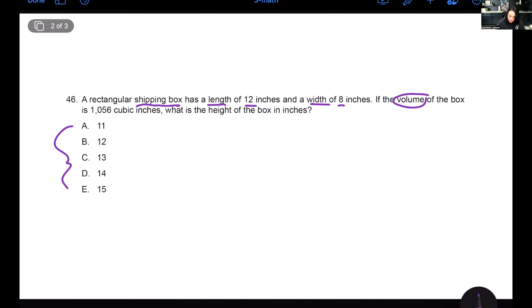Has a length of 12 inches. So I've got a length of 12 and a width of eight inches. Both of them are in inches. That's good news. I don't have to convert anything. If the volume of the box is 1056 cubic inches, what is the height of the box? And so you might be like, oh my God, how do I do this? This is very simple. We're talking about volume here. Volume equals length times width times height.